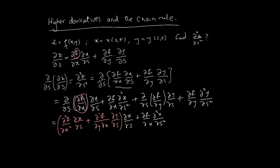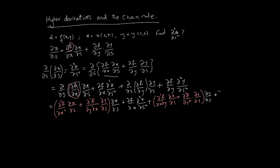Here again, let's write in red where the chain rule is being applied — this time on fy. So it's going to be (∂²f/∂x∂y) times xs plus (∂²f/∂y²) times ys, and all of that is multiplied by ys. Plus we still have the term ∂f/∂y times ∂²y/∂s².